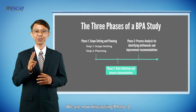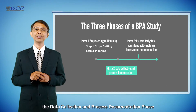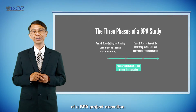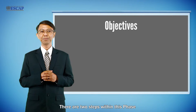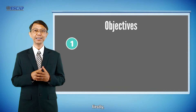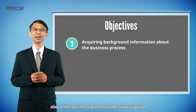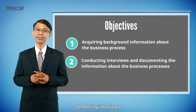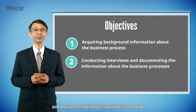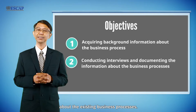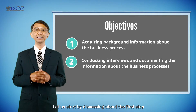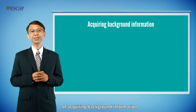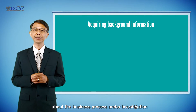We are now discussing phase 2, the data collection and process documentation phase of a BPA project execution. There are two steps within this phase: firstly, acquiring background information about the business process under investigation; and secondly, conducting interviews and documenting the captured information about the existing business processes.